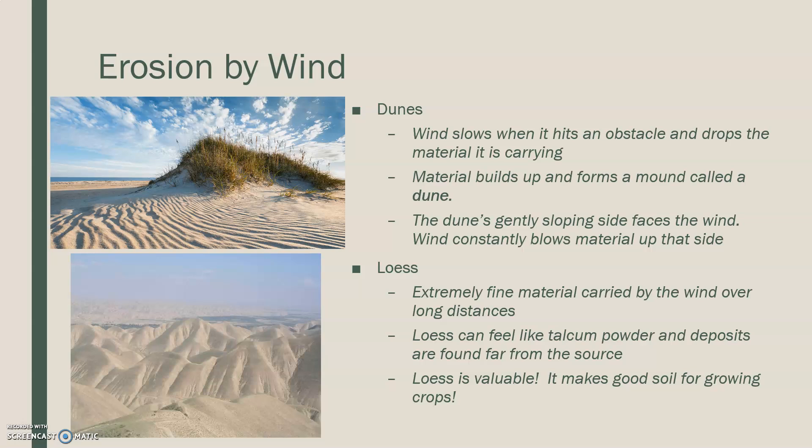Loess is another wind deposit — sometimes people refer to it as 'louse.' It's extremely fine material carried over long distances by wind, feeling almost like talcum powder or very fine baby powder. Deposits are often found far from the original source; it might start in California and end up all the way across the United States. Loess is very valuable and makes for good soil for growing crops, so farmers look for it in their soil to have a rich harvest.